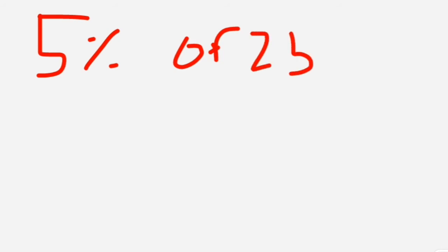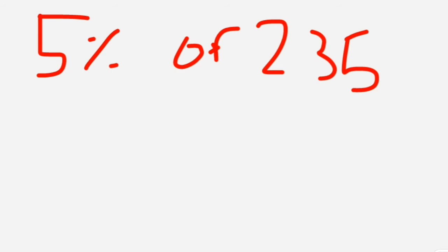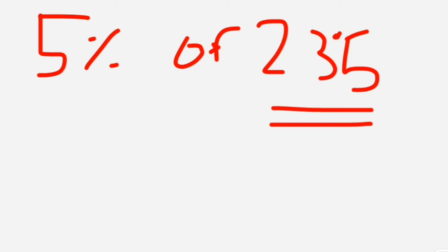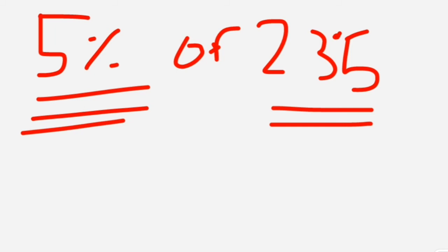The percentage trick: how to calculate 5 percent, 10 percent, 75 percent, 50 percent of a number. For 5 percent of 235: first calculate 10 percent of 235 by placing a decimal after the unit digit — that's 23.5. Then 5 percent is simply 23.5 divided by 2, which equals 11.75.